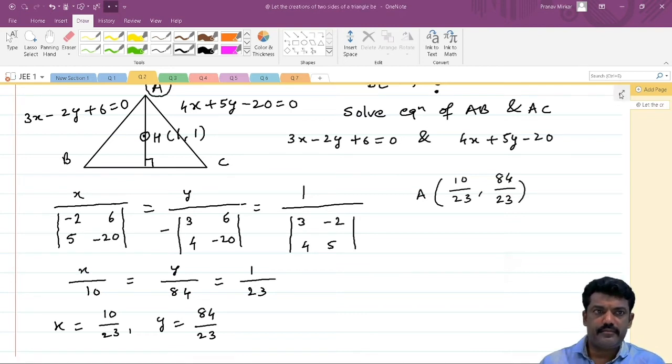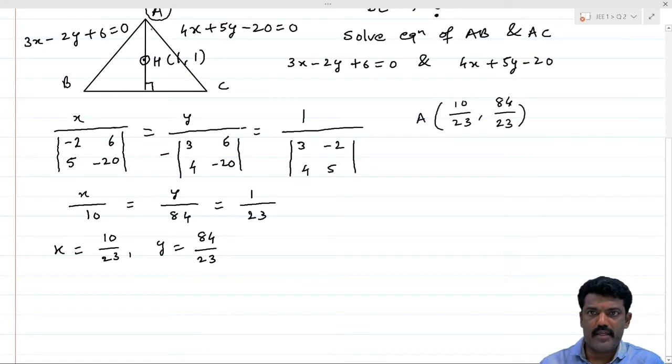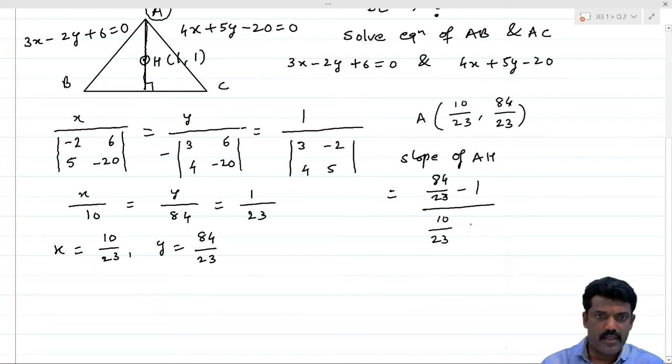Now I will find the slope of AH altitude. Slope of AH is (84/23 - 1) divided by (10/23 - 1). This is the slope of AH.